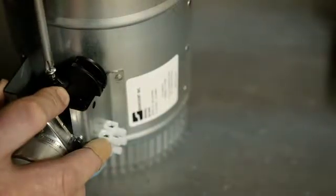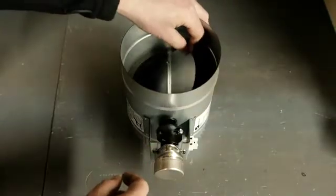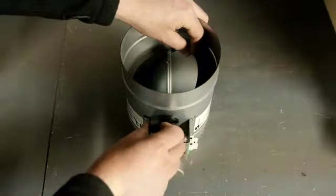begin by removing the screw from the outer coupler arms and adjusting the damper in the desired position. Then, rotate the outer coupler arm against the motor bracket and replace the screw.